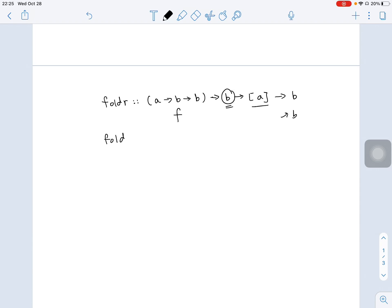FoldR definition would look like this. f, init, empty array would just give us an init value. And if FoldR is not empty value, we would call the function f on the first element x, and then recursively call FoldR, f on the FoldR, init, rest of the list.